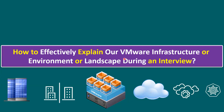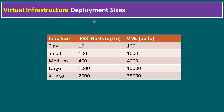Before jumping to the answer, let me give some basic points. Back to basics: virtualization infrastructure deployment sizes. Like t-shirt sizing — tiny, small, medium, large, and extra large — it completely depends on ESXi host count and virtual machine count. Tiny: up to 10 ESXi hosts, 100 VMs. Small: up to 100 ESXi hosts, 1,000 VMs. Medium: up to 400 ESXi hosts, 4,000 VMs. Large: 1,000 ESXi hosts, 10,000 VMs. Extra large: up to 2,000 ESXi hosts and 35,000 VMs.